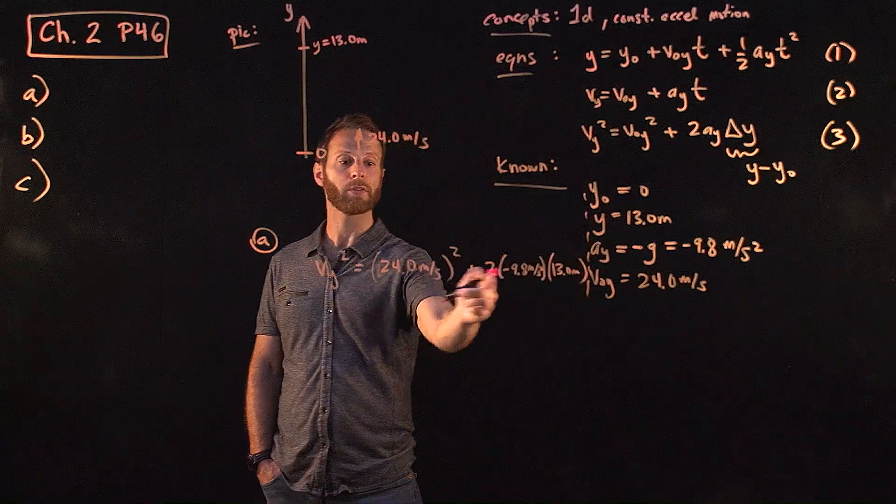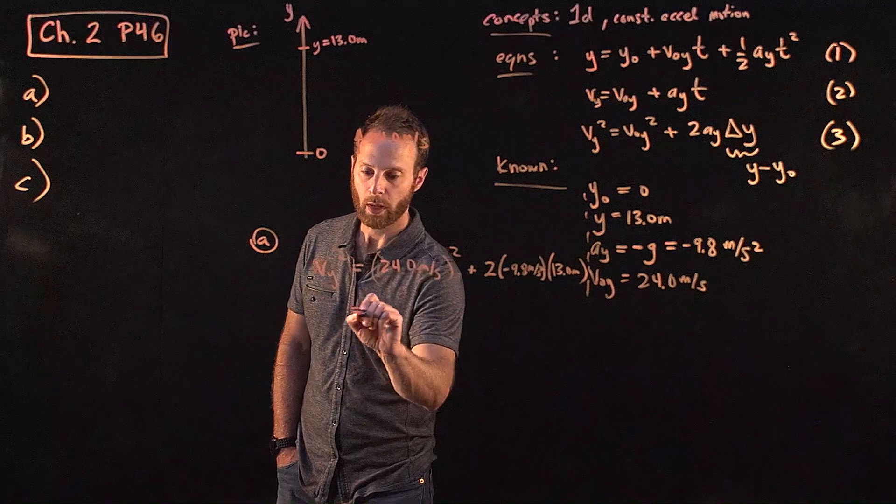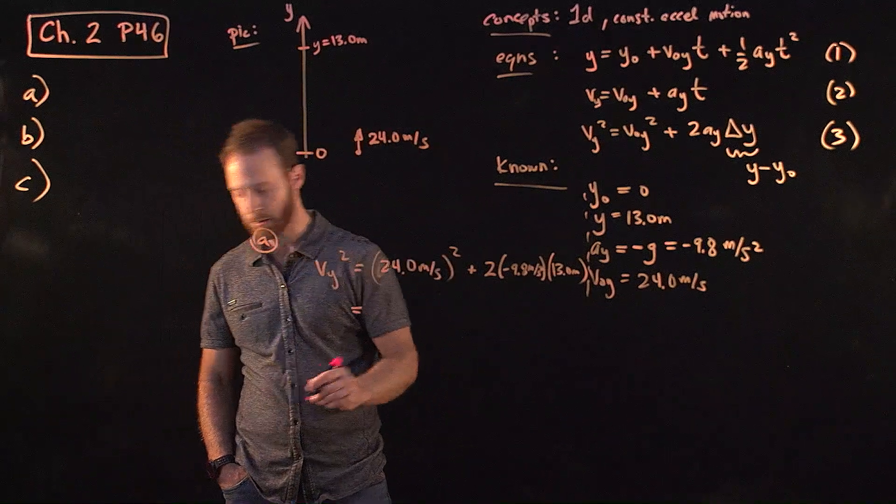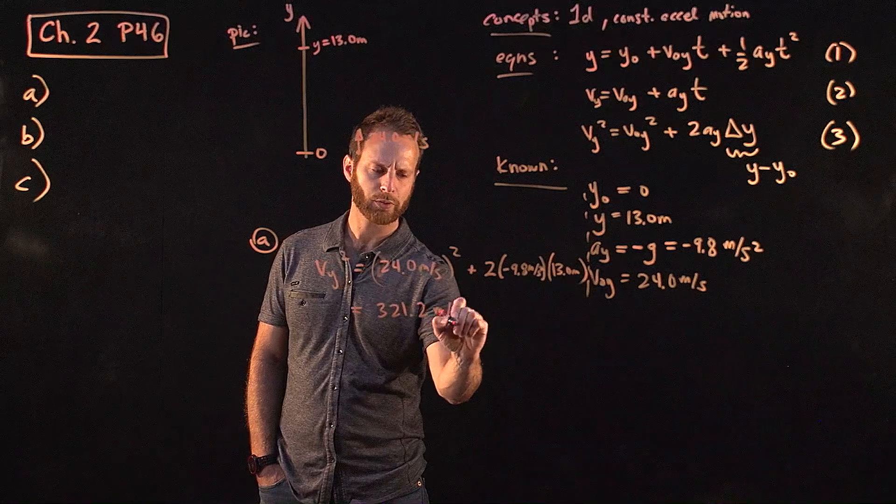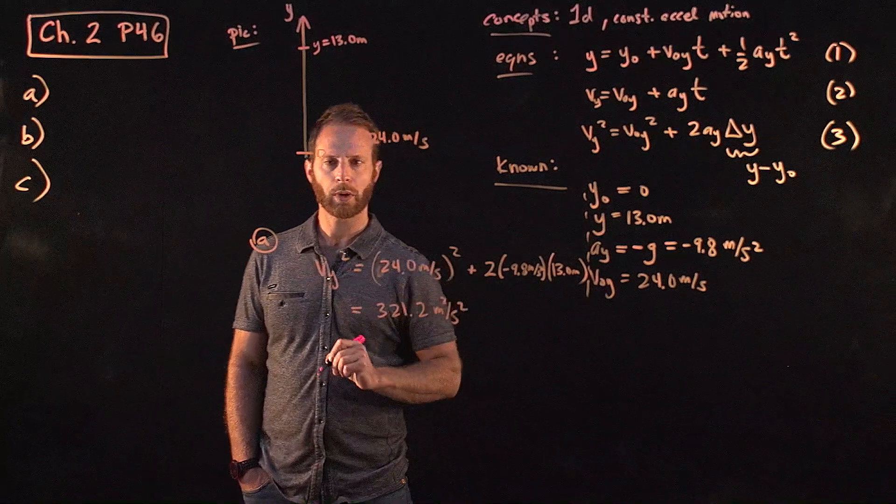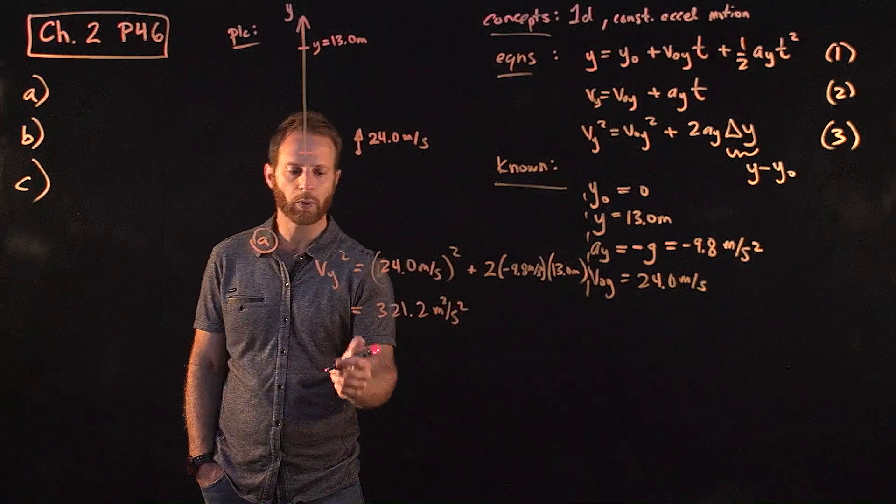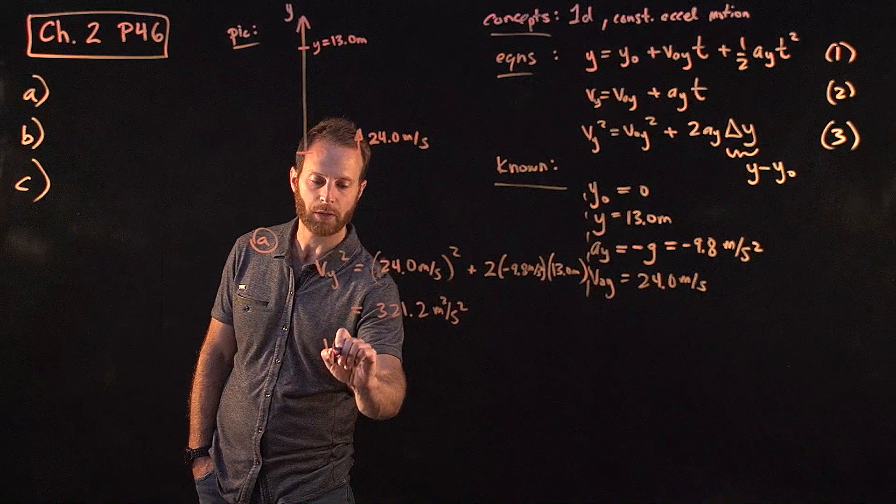So you realize we know everything in this equation. We can go ahead and compute. Apparently, Vy squared is about 321.2 meters per second. Both of those are squared. So we're almost there.